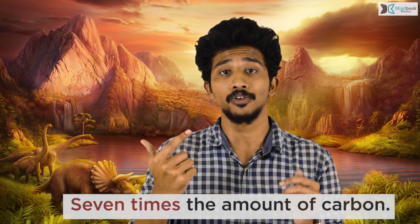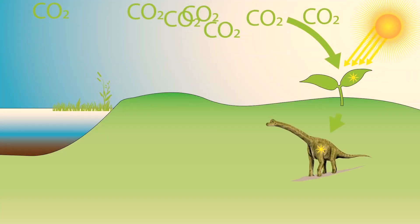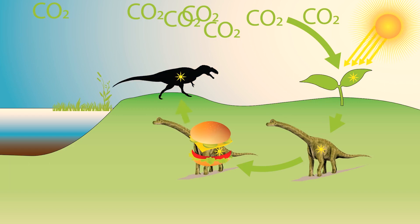In order to truly understand what fossil carbon is, we have to get into a time machine and travel back to the late Jurassic period. In the land of the dinosaurs, Earth's temperature was very high and Earth had over 7 times the amount of carbon that we have right now. The carbon cycle was still active — plants took in carbon dioxide, animals ate these plants, bigger animals ate those animals, and eventually an animal would die, decompose, and the carbon would be returned to the atmosphere. This is the way it was supposed to happen.